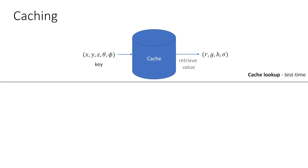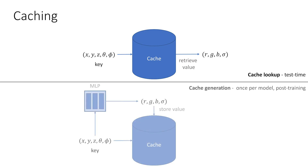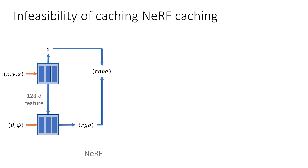What we propose to do instead is to replace the neural network with a cache that can be efficiently queried at test-time. To generate the cache, we sample the input space of the network in a way that covers the scene we are modeling. We then capture the network output for those samples and save the input-output pairs in the cache. Note that the cache needs to be generated only once and after the training is complete.